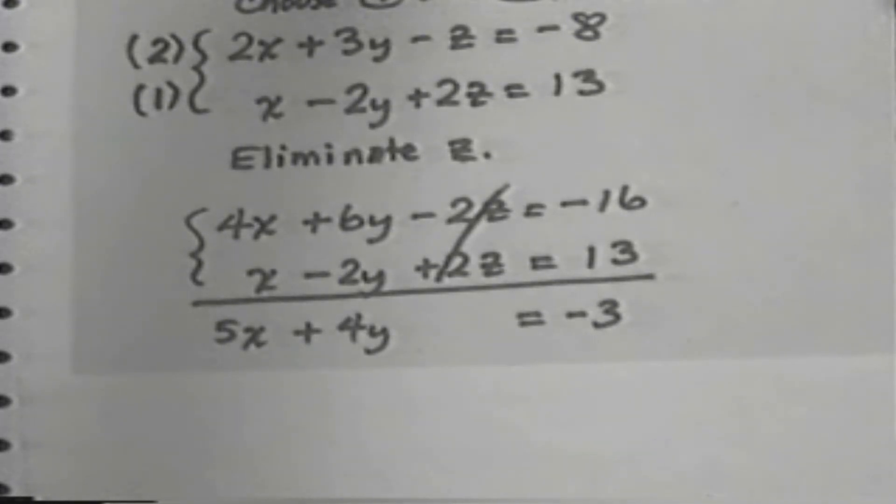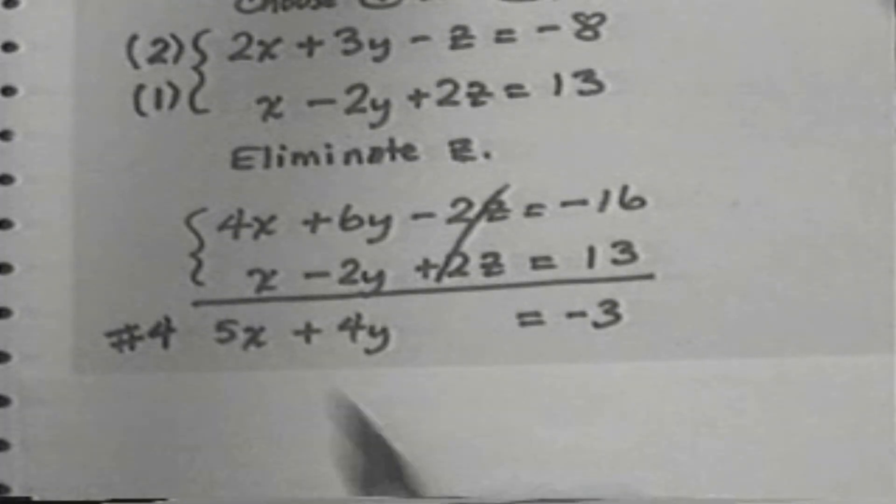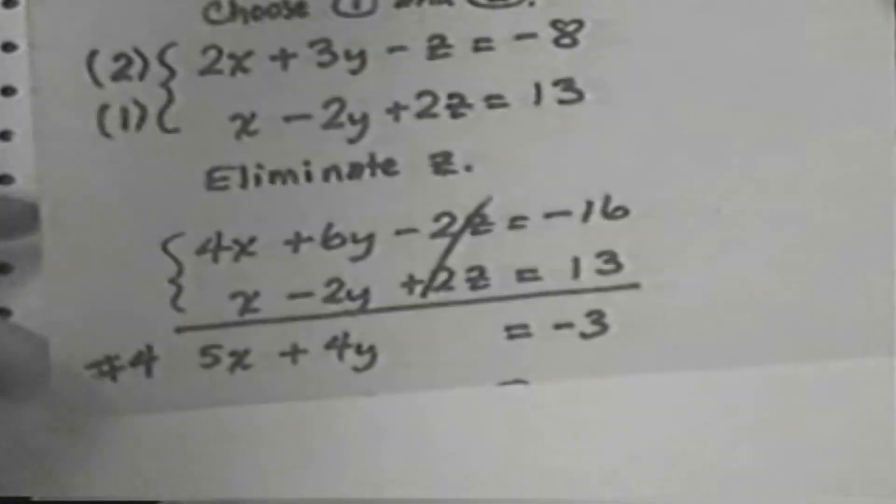This is a brand new equation that has been obtained from putting together equations 1 and 2. Let's call this one equation number 4. Equation number 4 is 5x plus 4y equals negative 3. Now I go back to the original system.